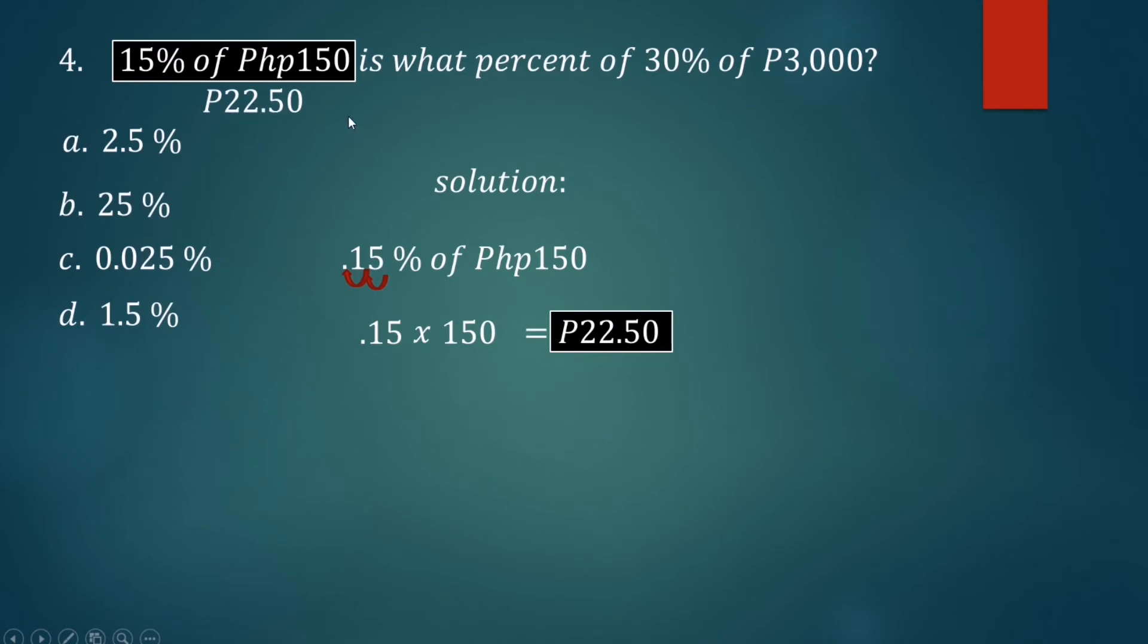So we have 22 pesos and 50 cents equals what percent. We let the variable R times 30% of 3,000 pesos. Again, change this percent to decimal - move two places to the left - from this point one, two, that is equivalent to 0.30 multiplied by 3,000 pesos, that is 900 pesos.